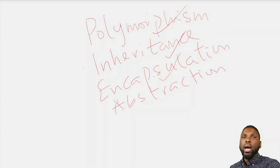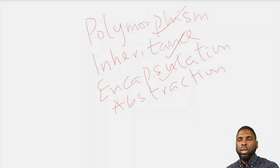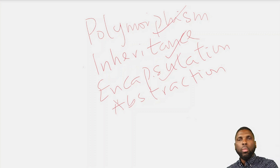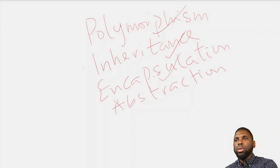These four concepts — polymorphism, inheritance, encapsulation, and abstraction — are the concepts of object-oriented programming. In the next class we'll be talking about the basics in Java: primitive types, data types, control flows like for loops and if statements. But for today I hope I've been able to do justice to explaining the basics of Java. Now let's jump right in to installing and writing your first Java and Maven application.